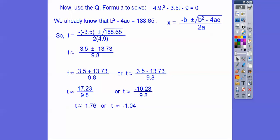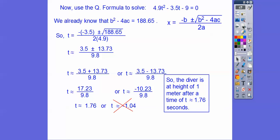Now, since we're talking about time, we can disregard this negative, because we're not going to have a negative time that that diver jumps. So the diver is at the height when he jumps. He's at the height of 1 meter after about 1.76 seconds. So he's up here at 10 meters, and then he dives. So after about 1.76 seconds, he's about a meter above the water right there.